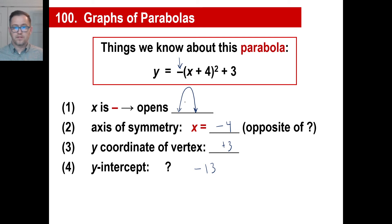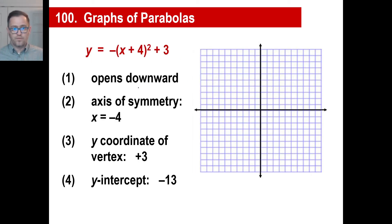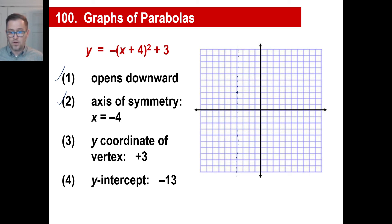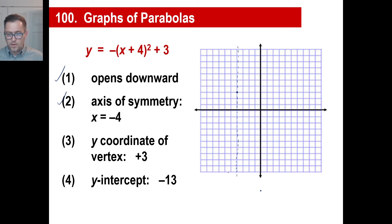So the y-intercept is negative 13, meaning it's way down there. It opens downward. The axis of symmetry is at x equals negative 4. The vertex is at y equals positive 3 — that's the highest point. Since the y-intercept is 4 units away from the axis of symmetry, we mirror it 4 units on the other side. And that's what your parabola looks like — you can look at different parts of the equation and draw it without plotting millions of points.